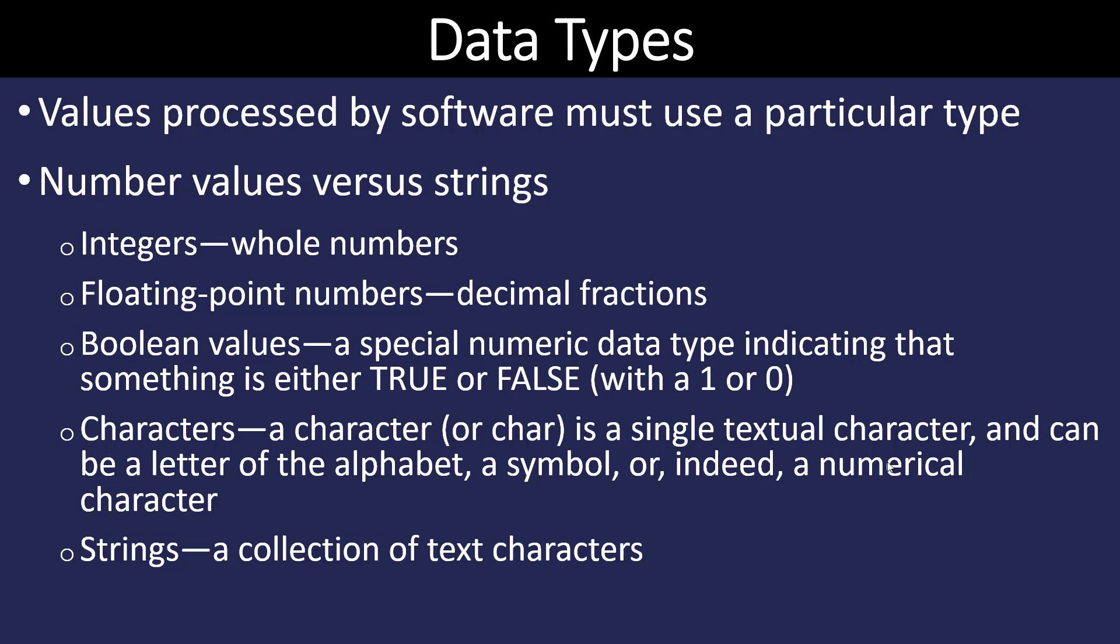We have Boolean values, which is actually the smallest data type we can have. That's either a 1 or a 0, so it just takes up one bit. Then we have characters, single characters such as an A sitting all by itself. And we have a string, which is a bunch of characters or a collection of text characters stored together at once.